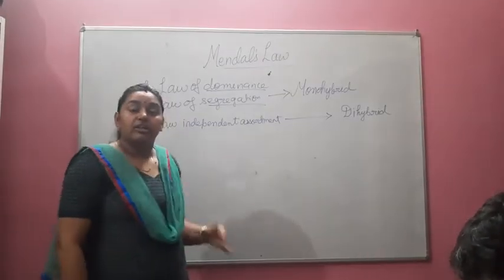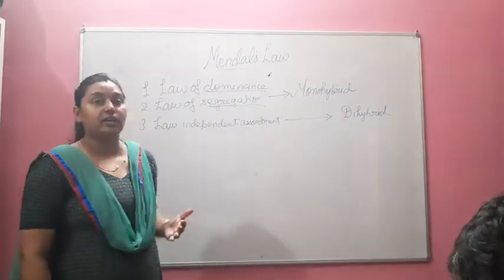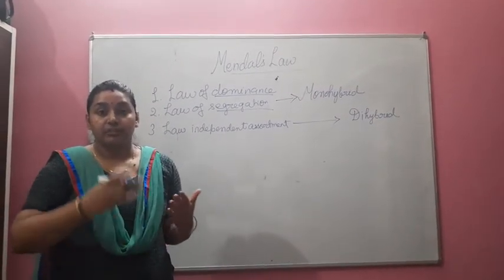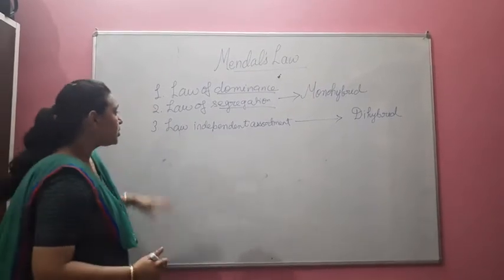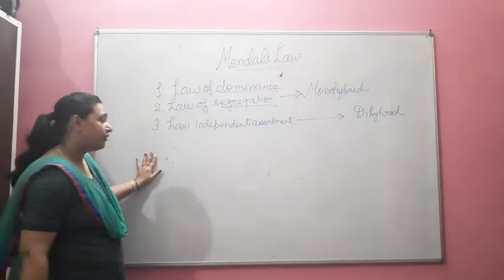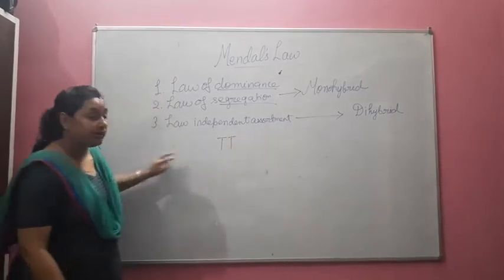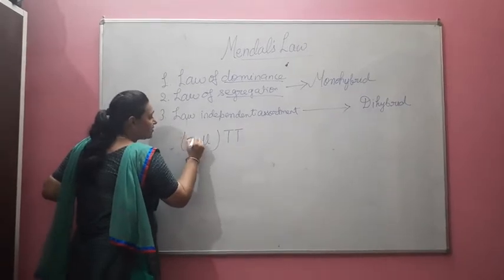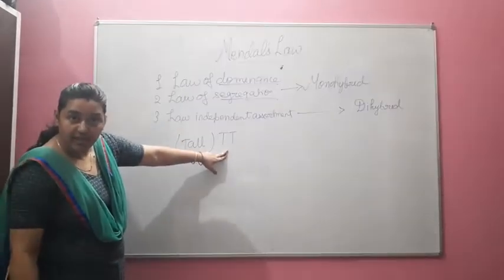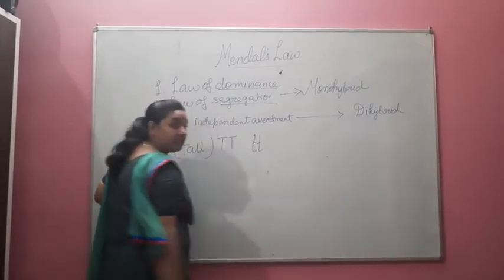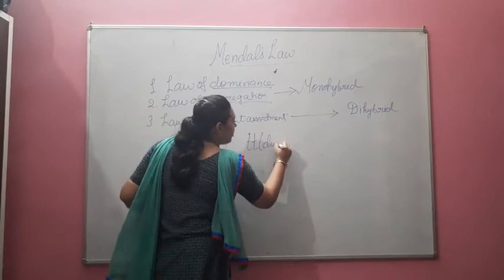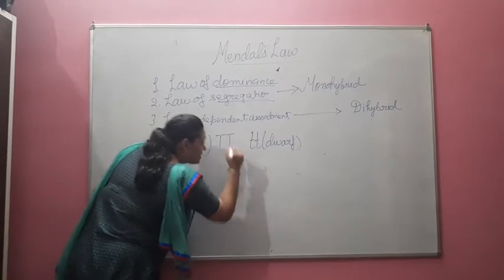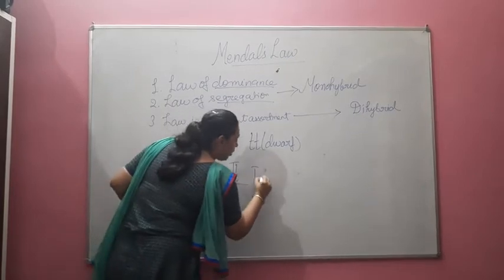Mendel based his study on different factors. These factors are actually the genes which we call nowadays. For example, he represented a tall plant as capital T and capital T (TT), while small t and small t (tt) represents the dwarf plant. One capital T and one small t (Tt) also represents the tall plant.